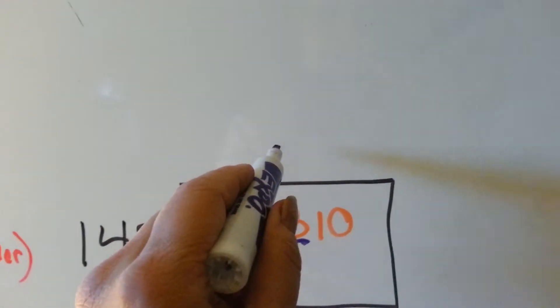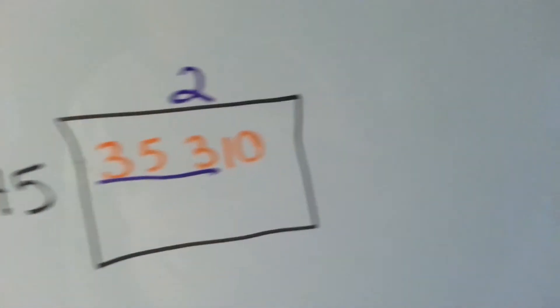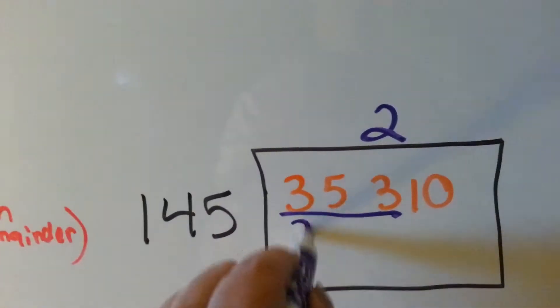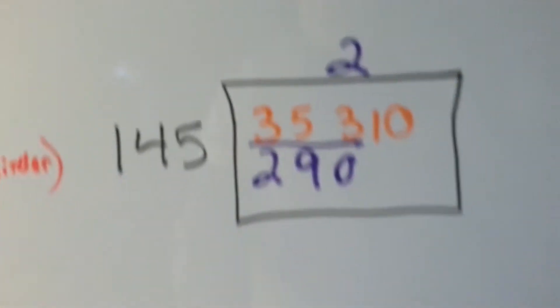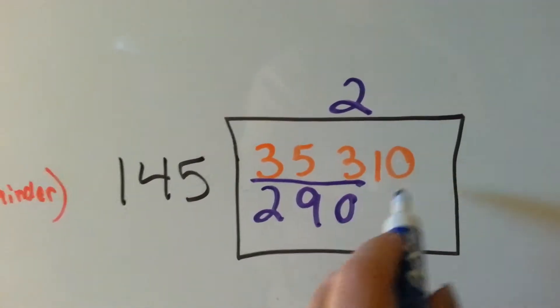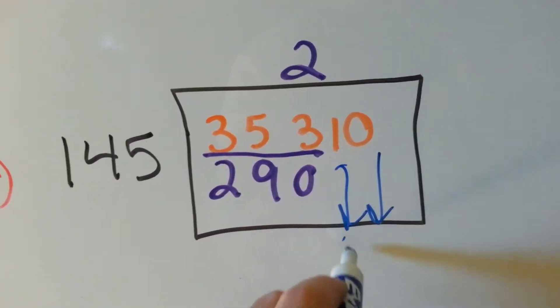And it's going to go above this 3, because that's the number, the 353 that we're putting it in. Okay. And we know that it's 290, right? Okay. So, now, we're not going to use this 10 so it drops down. Both digits drop down, okay?